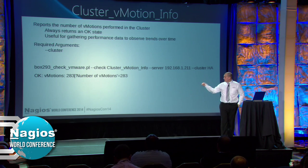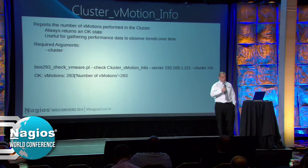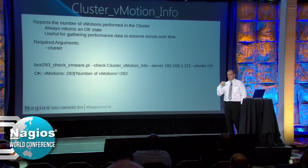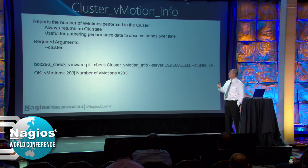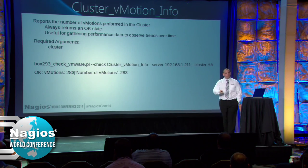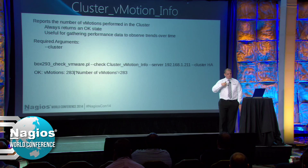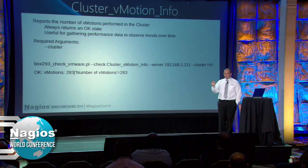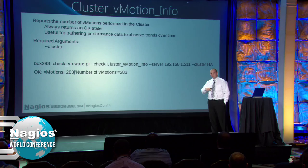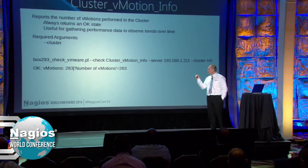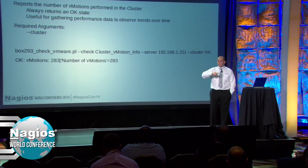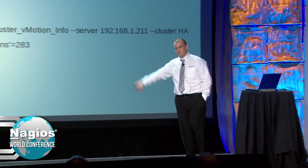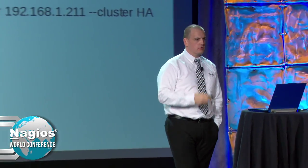Cluster vMotion info - this is a really good one. The vMotion info is just a counter that every time a vMotion happens, it increments by one. So if something's happening in your environment every night when backups happen and it causes a bunch of vMotions, you're not at work to observe this. So this is a way of seeing that at 10pm every night there are 20 vMotions that happen - it's a way of identifying trends in your environment.